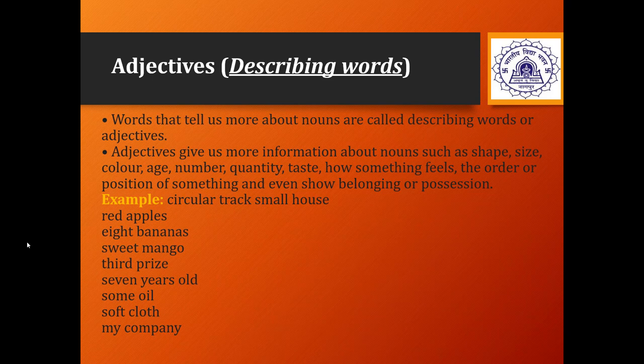For example, 'circular track' — the word circular tells us about the shape. 'Small house' — small tells us about the size. 'Red apples' — red tells about the color. 'Eight bananas' — tells how many bananas there are. 'Sweet mango' — what kind of mango it is. 'Third' — tells the rank or position. 'Seven years old' — the age. 'Some oil' — the quantity. 'Soft cloth' — the quality or kind of cloth. 'My company' — shows the belonging or possession of that particular company.